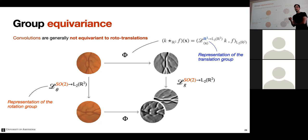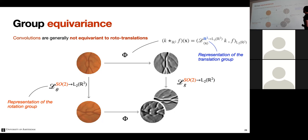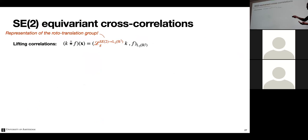It is equally clear that standard convolutions are generally not equivariant to rotations: if you rotate the image and then apply the 2D convolution, you get a different signal than if you first apply the convolution and then rotate. This mismatch arises because the cross-correlation definition does nothing with rotations. The intuitive step forward is to simply replace the representation of the translation group with the representation of the roto-translation group.